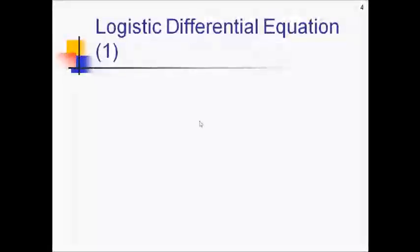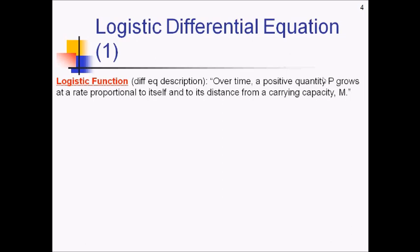Now that we've seen a graphical representation of logistic functions, let's take a look at the differential equation and the algebraic end of it. The differential equation description of a logistic function: Over time, a positive quantity P grows at a rate proportional to itself, so this is pretty similar to exponential growth, and we could write this part as dP/dt equals kP, so proportional to its current level. And, this is the logistic part, and its distance from a carrying capacity M. So we could represent this part as M minus P. Going back to the example, the rate at which a rumor is growing is proportional to the number of students who know it, that's the kP part, and the number of students who don't know the rumor, that's the M minus P. So this is what the differential equation looks like for a logistic function.